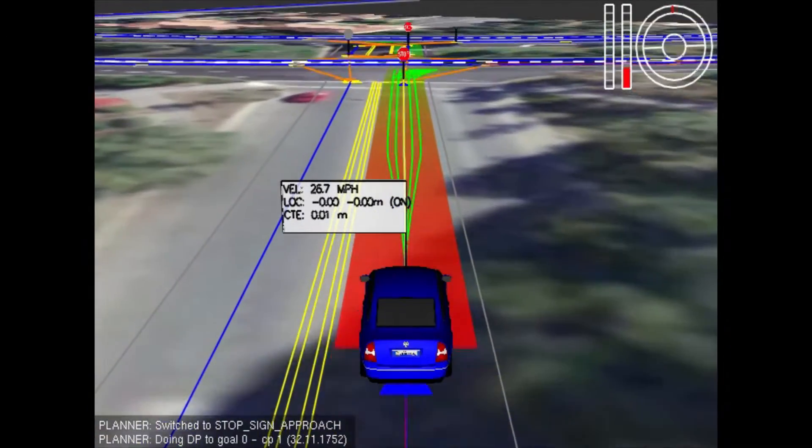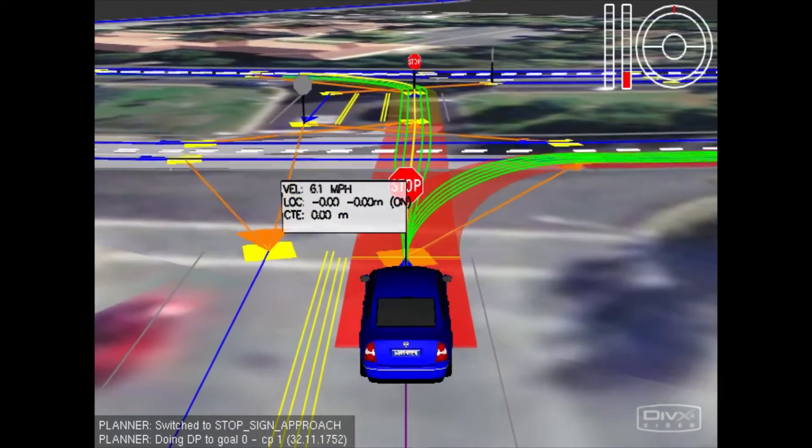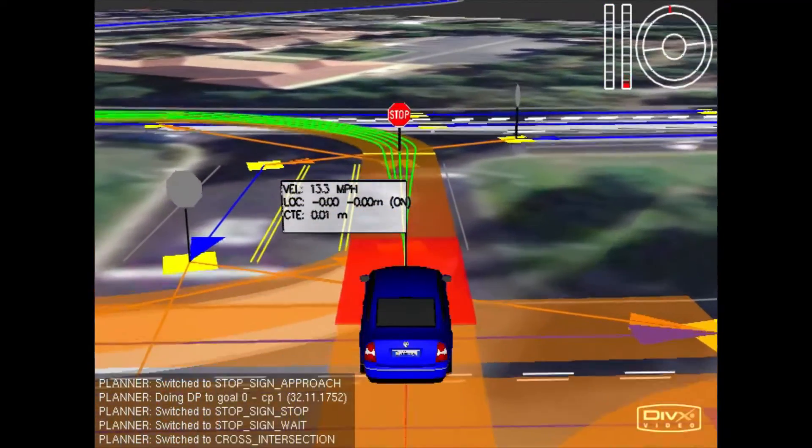But if we make a lane shift prohibitively expensive, just as we made a left turn expensive before, then the car chooses a different path. It goes straight.